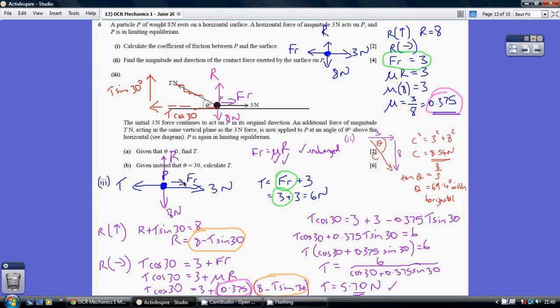Resolving vertically, we are unchanged. Our normal reaction is still 8. Our coefficient of friction is unchanged, so our friction is unchanged. So our tension is the unchanged friction of 3 plus this 3 newtons. Our tension is 3 plus 3 equals 6.